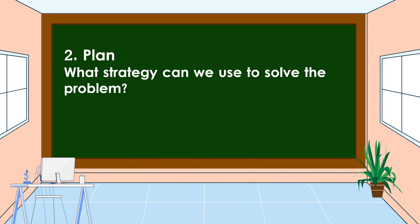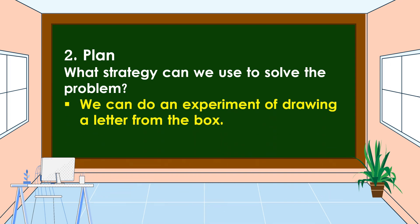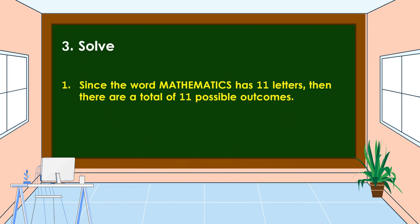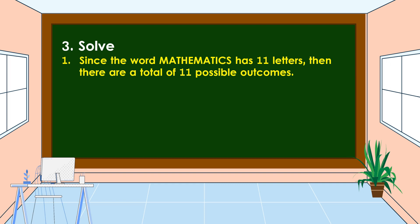The next step is to make a plan. The strategy we can use is to do an experiment of drawing a letter from the box. Then we carry out the plan. For the first question, since the word mathematics has 11 letters, there are a total of 11 possible outcomes.